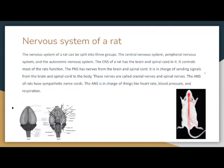The nervous system of a rat can be split into three groups: the central nervous system, the peripheral nervous system, and the autonomic nervous system. The central nervous system has a brain and spinal cord and controls most of the rat's functions. The peripheral nervous system has nerves from the brain and spinal cord and sends signals from the brain to the body — these nerves are called cranial nerves and spinal nerves. The autonomic nervous system has sympathetic nerve cords and is in charge of things like heart rate, blood pressure, and respiration.